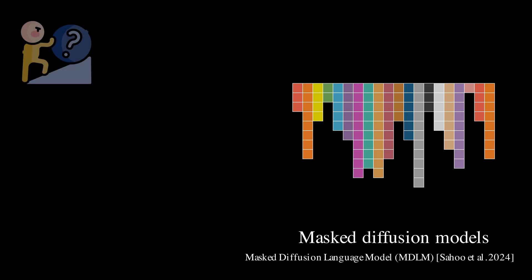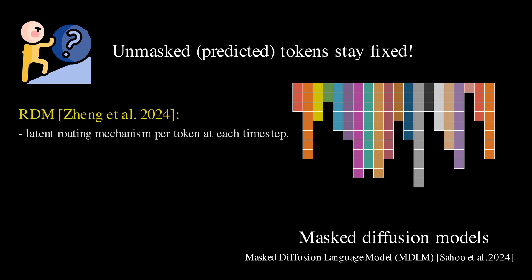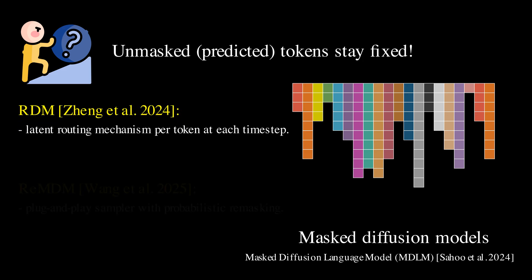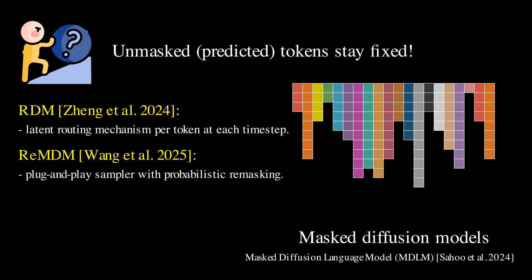However, this approach has a drawback. Once a token is unmasked, any mistakes made cannot be corrected in later steps, leading to potential error accumulation. Fortunately, recent research has introduced various strategies to re-mask previously predicted tokens, enabling the model to iteratively refine its predictions.